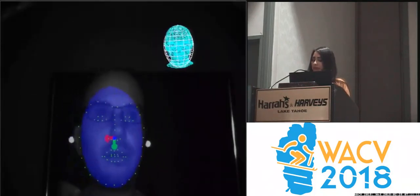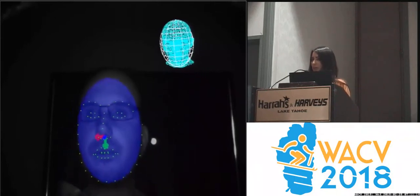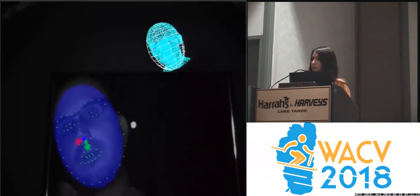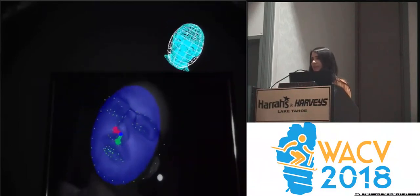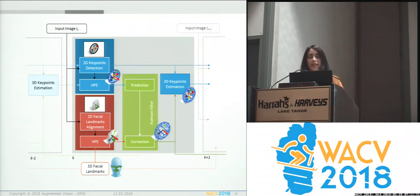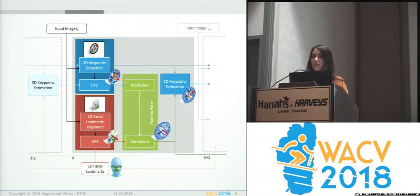So what we're trying to do is a method that is able to estimate the head pose for large head rotation, and also that can recover in case of drifting. What we propose is to use a Kalman filter to combine the head pose from key points and also the head pose from facial landmarks. The head pose estimated from key points is integrated at the prediction step in the Kalman filter, and the correction step includes the head pose estimated from facial landmarks.